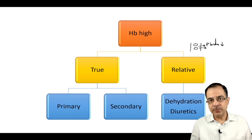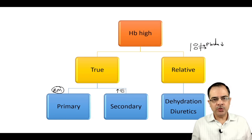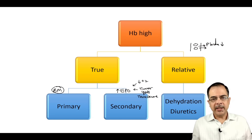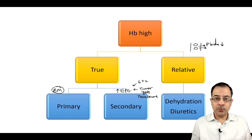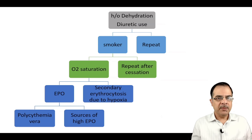True high hemoglobin means RBC mass is genuinely elevated. It can be primary — bone marrow-related, such as polycythemia vera — or secondary, due to increased erythropoietin. Increased EPO can result from hypoxia, EPO-secreting tumors such as hemangioblastoma, hepatoma, or renal cell cancer, polycystic kidney disease, or exogenous testosterone intake — for example, in female-to-male gender dysphoria patients.